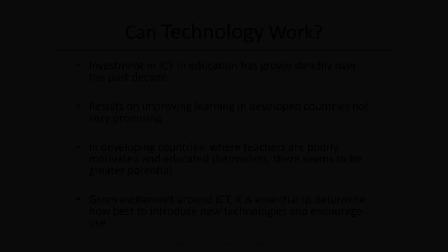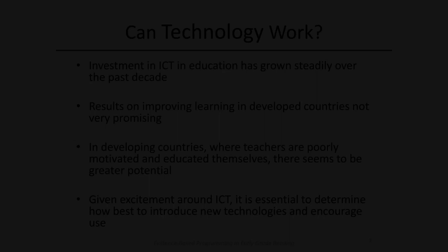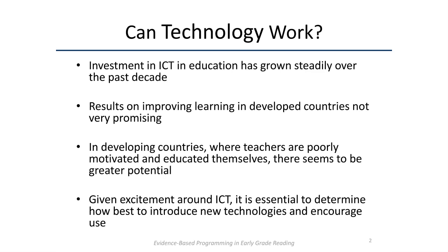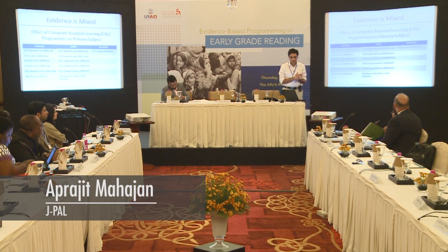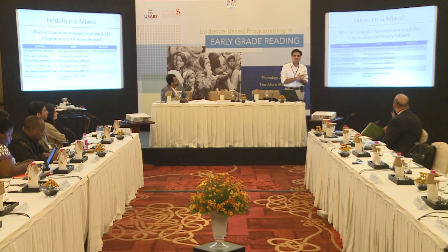The general takeaway from my part of the presentation is that while there is a lot of enthusiasm about the use of ICT towards improving outcomes in education, there is still a lot more that needs to be learned about how best to introduce ICT in conjunction with all of the other inputs that go into producing learning outcomes in India. What I've done here is summarize the evidence based on about 9 or 10 recent papers that have all used randomized evaluations to look at the effect of ICT or computer-assisted learning.